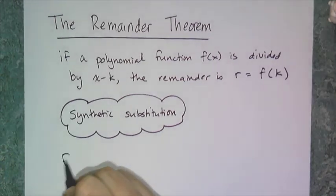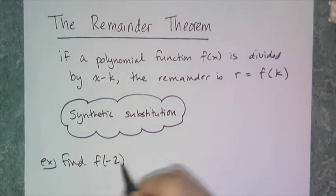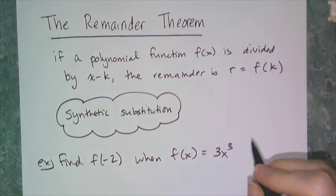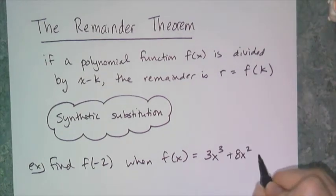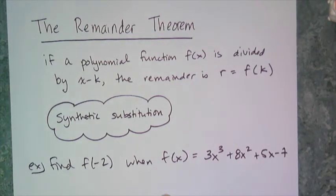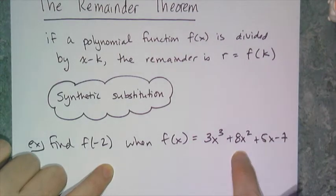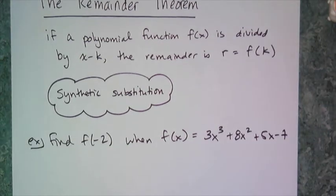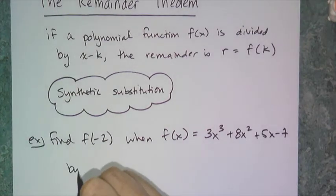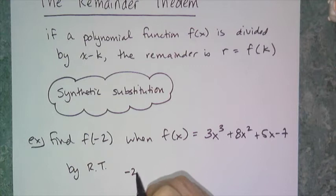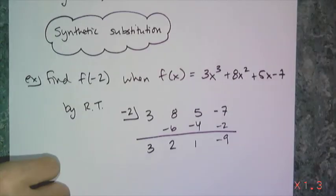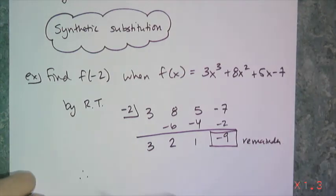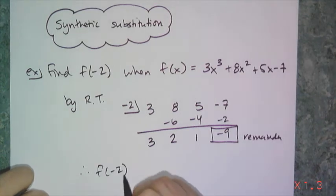If I say find f of negative 2, when f of x equals 3x cubed plus 8x squared plus 5x minus 7, you can go ahead and plug in negative 2 and use the order of operations, or you can use the remainder theorem. By the remainder theorem, I can set up a synthetic division, and this remainder is f of negative 2, which equals negative 9.